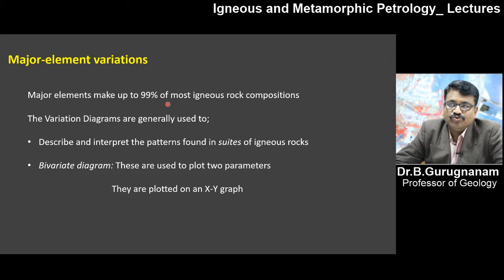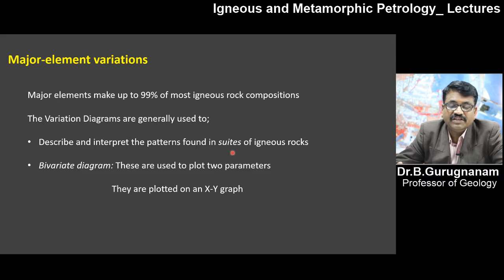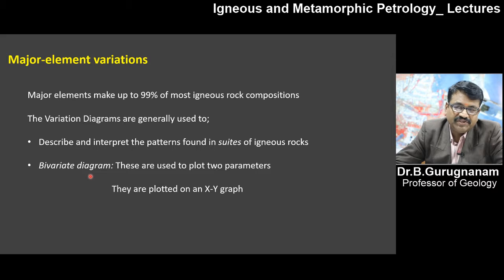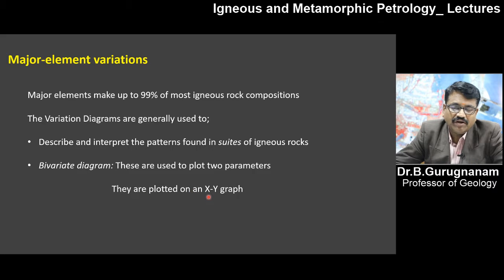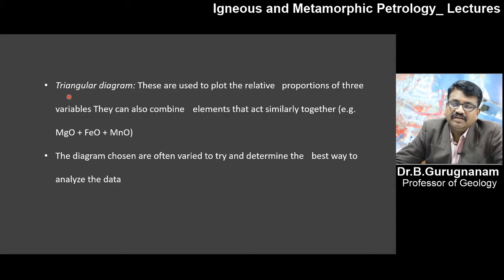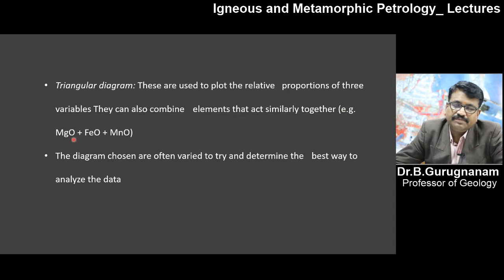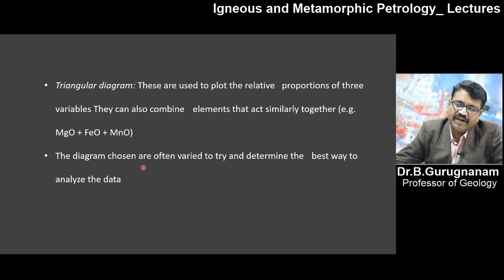Variation diagrams are generally used to describe and interpret the patterns found in rock suites — what elements dominate, whether a given element shows an increasing or decreasing trend. The bivariate diagram is the best two-variable diagram, plotting two parameters on an X-Y graph. The next type is the triangular diagram, which uses three parameters and represents relative proportions of three variables — for example, magnesium, iron, and manganese oxide, or combined elements with similar characteristics.